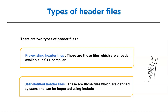Now let's discuss types of header files. There are two types in C++. First is predefined header files — these files are already present in the C++ compiler. We simply need to import these header files using #include, which will inform the compiler about the header file, and then we write the name of the header file between the angle brackets.